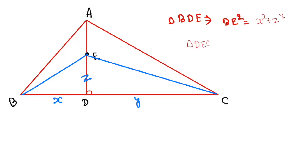If we ask what would be the Pythagoras in triangle DEC, the easy answer is nothing but CE² is nothing but z² plus y².